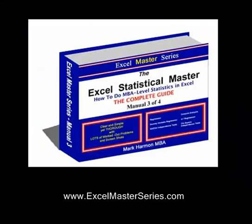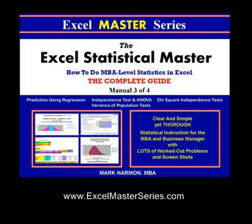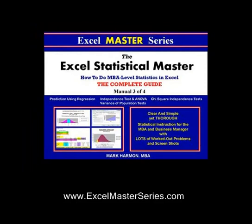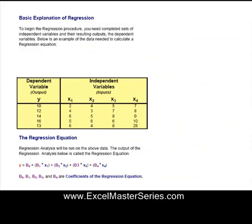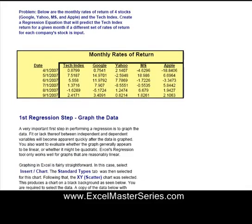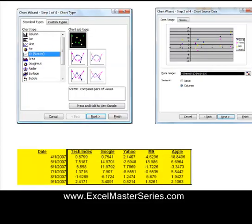The emphasis is on step-by-step frameworks. Here's Manual 3 — it covers regression using dummy variables, chi-squared independence tests, the variance of population tests, and ANOVA. Let's take a look at the regression section. Everything is presented in step-by-step frameworks; all regressions are solved with a four-step process.